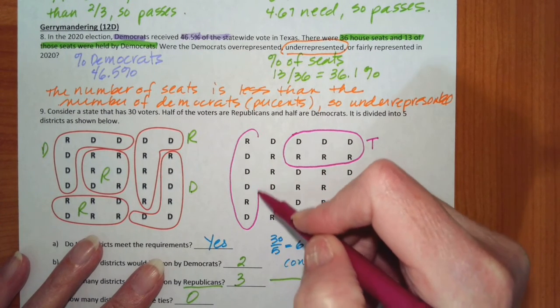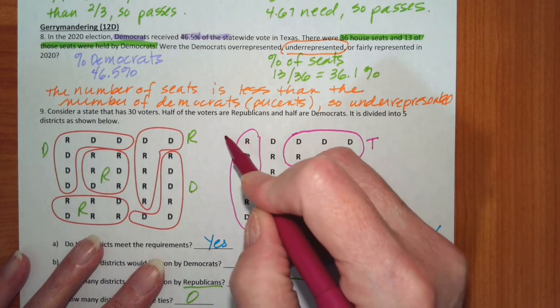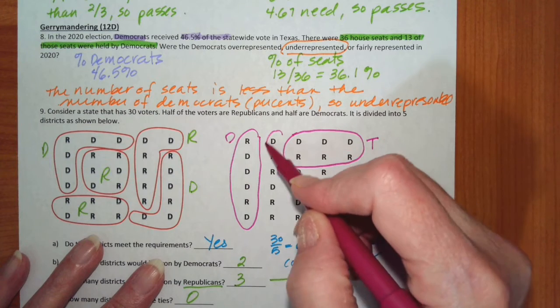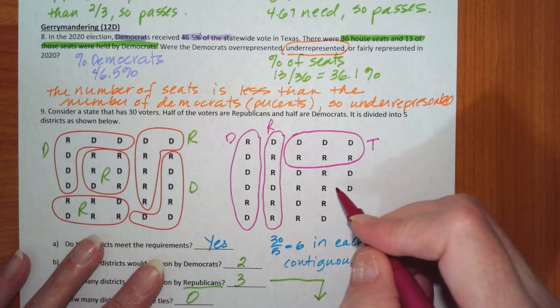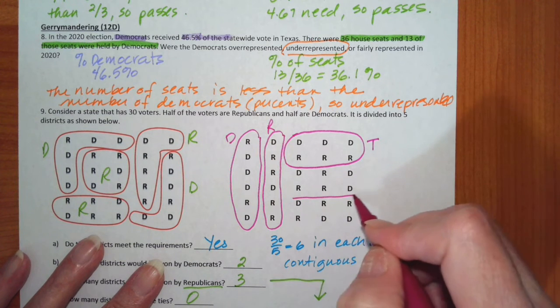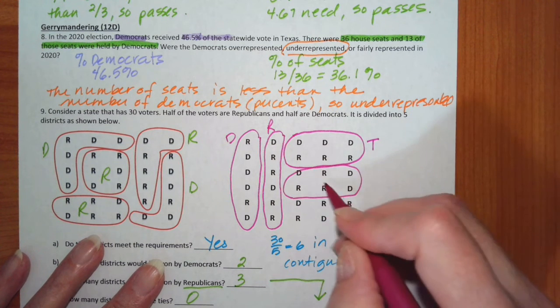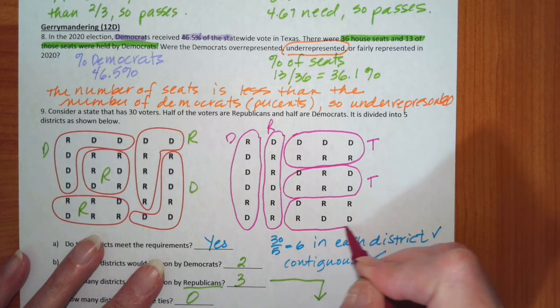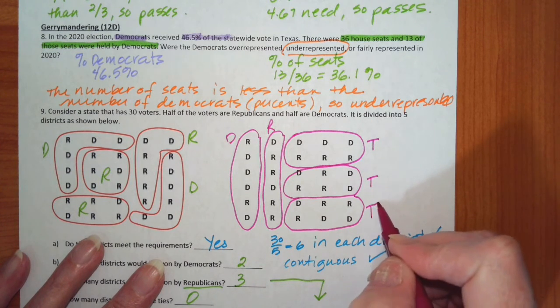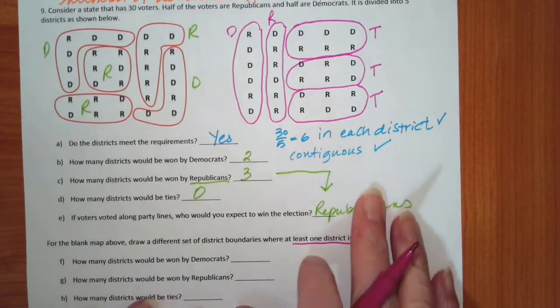Now I can split the rest of them up any way I want to. So I'll do these six, and this is Democrat. I'll do these six, that goes Republican. If I do these six, that's another tie. And these six, and that's another tie.